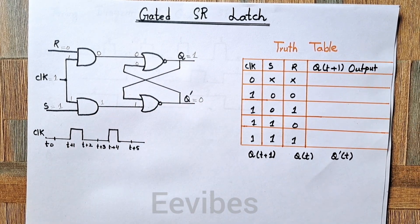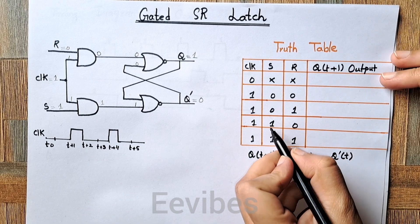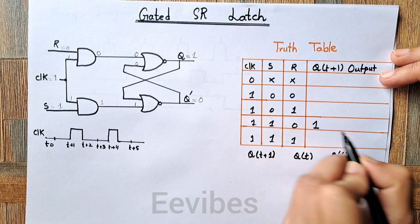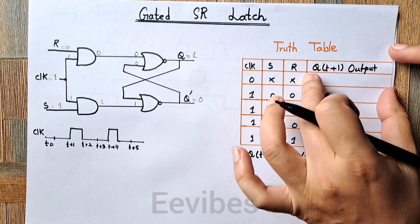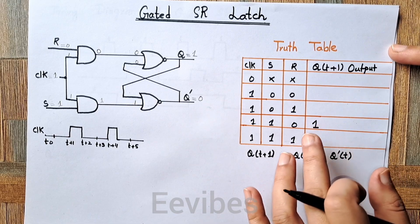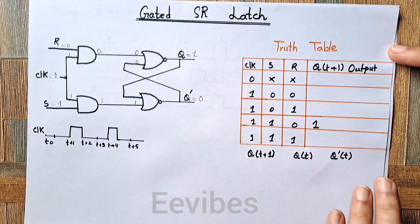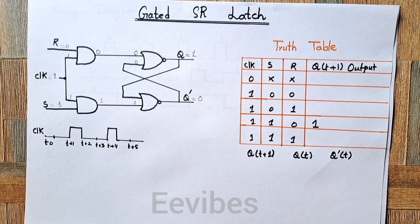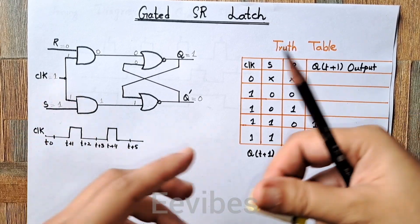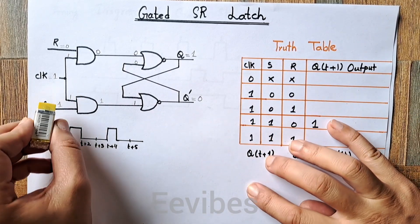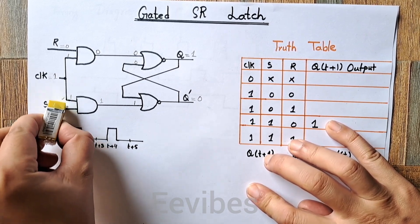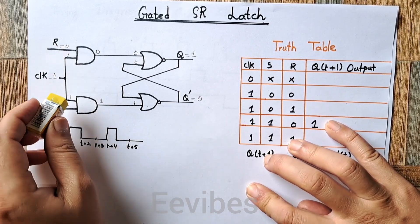For this combination we got that Q(t+1) will be equal to one. I am writing down Q(t+1) outputs only, not Q-complement, since it will be opposite to Q(t). Now since the clock signal is currently equal to one, what happens if I switch S to zero while keeping R unchanged? We will see how it affects the output.